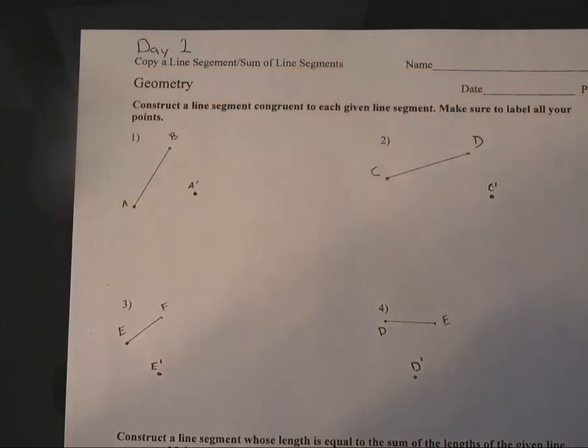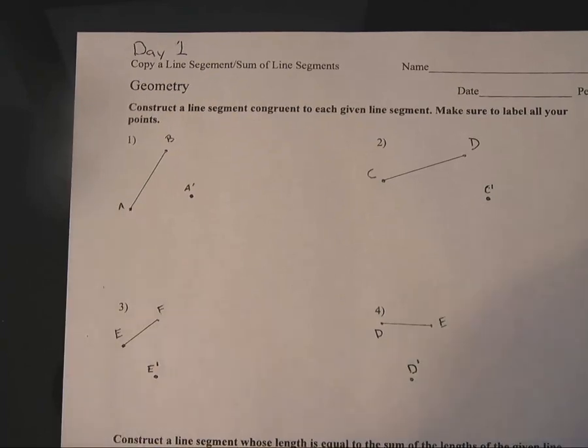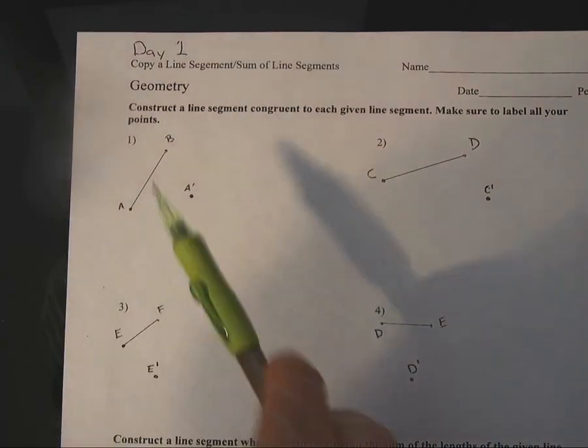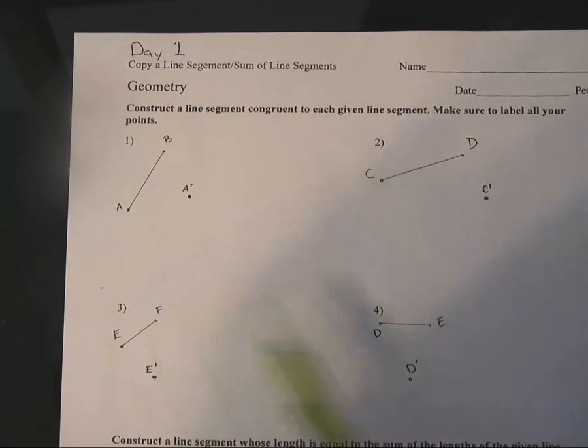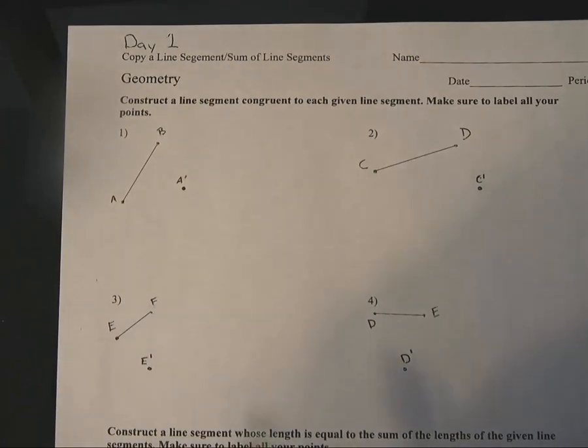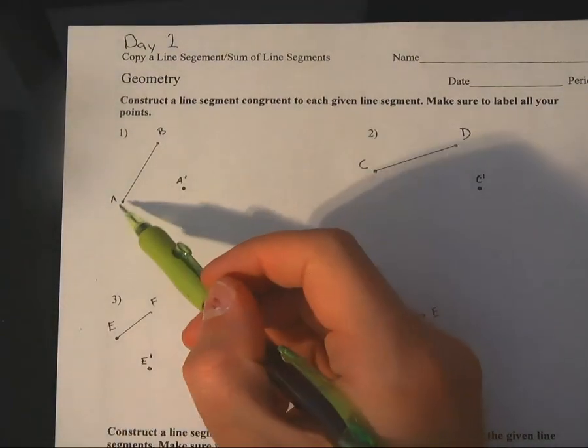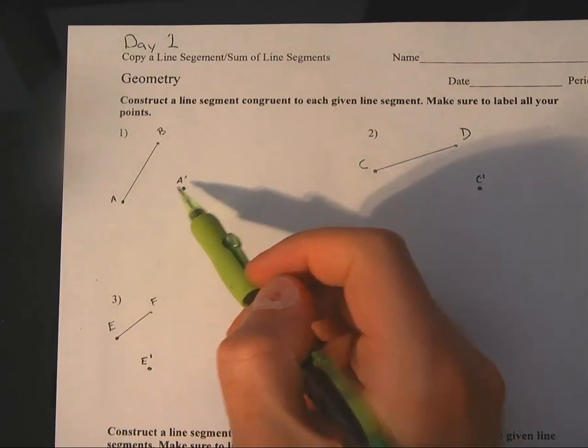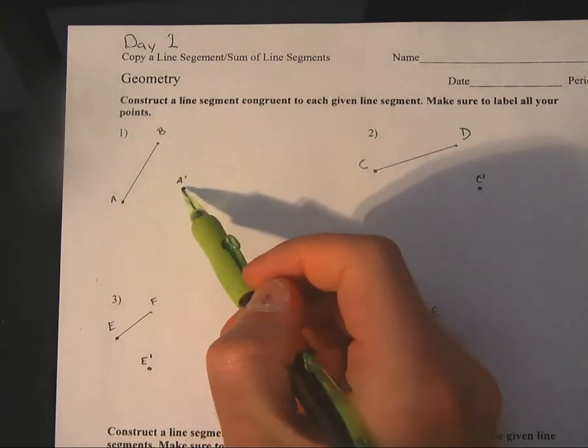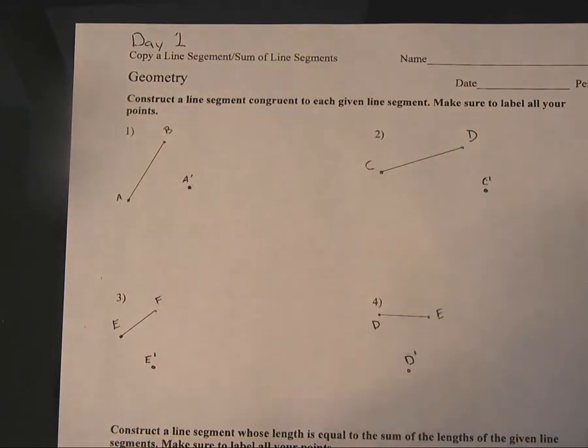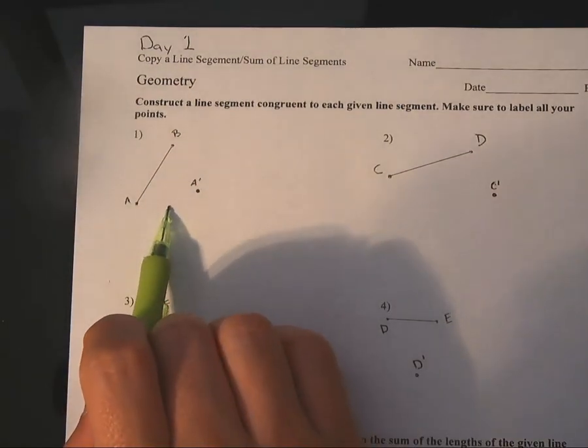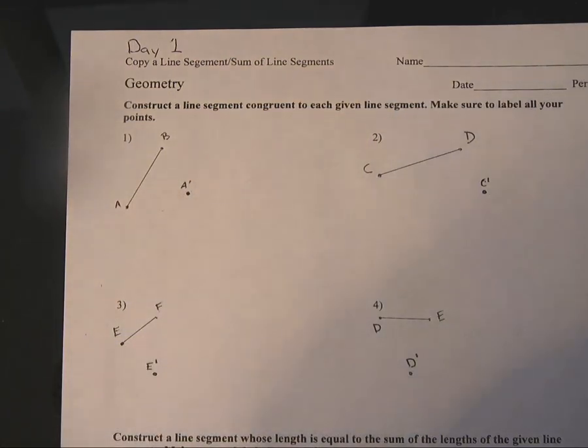All right, so now we should have our worksheet. You should be able to do problems one, two, three, and four. If you feel confident, go ahead and just copy all those line segments, making sure that we move A over to A prime and then copy that line segment AB over to A prime B prime. If you don't feel comfortable with that, I'm going to do number one with you guys right now.